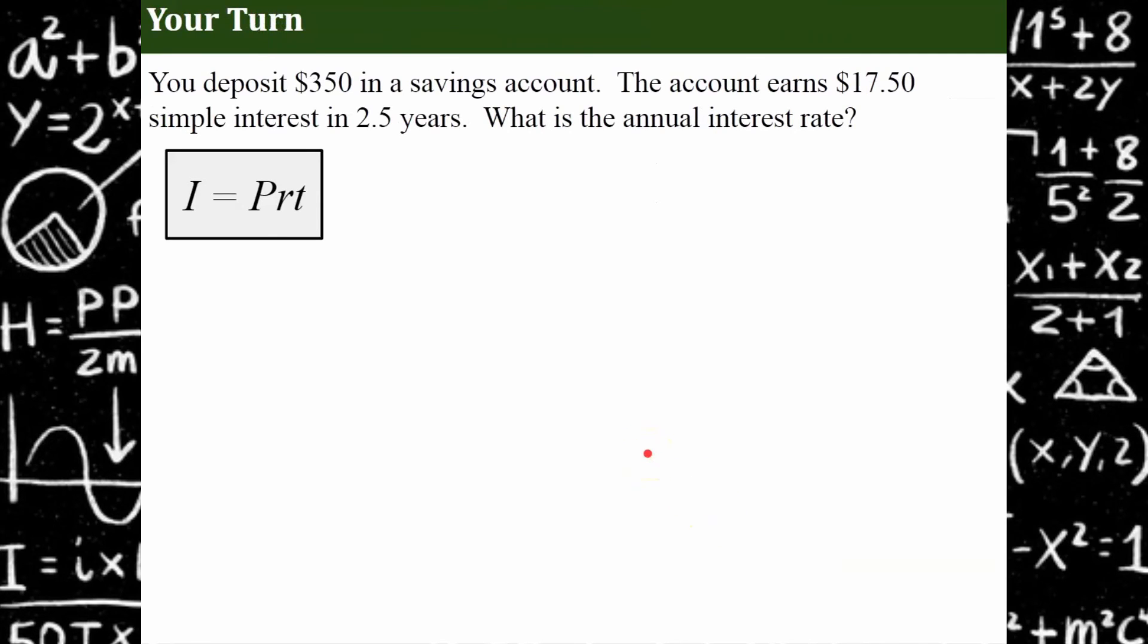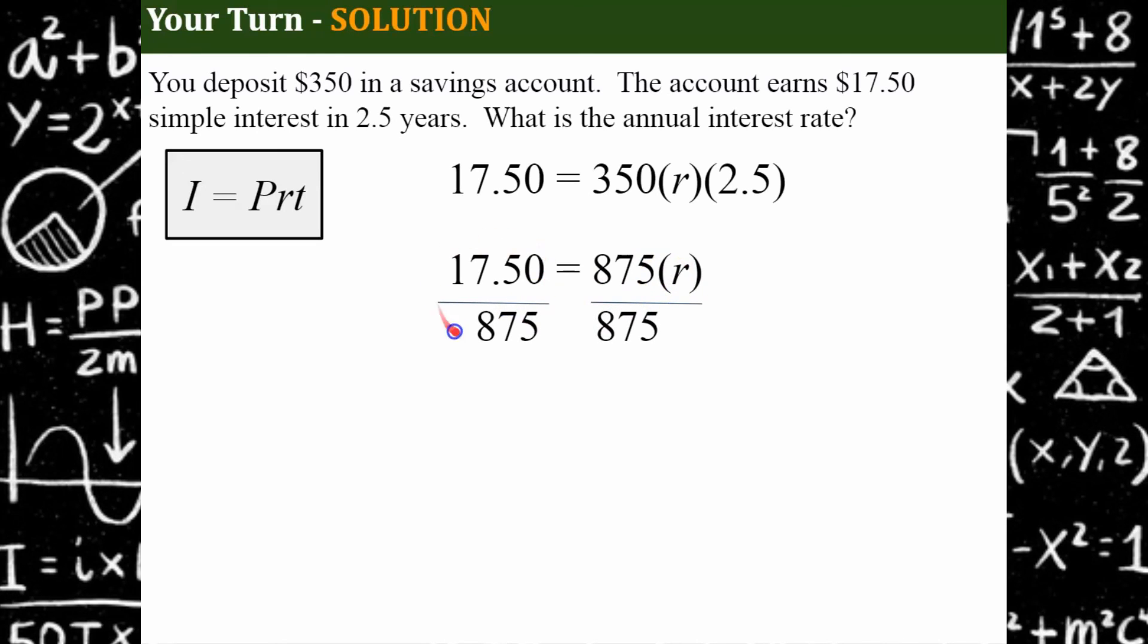Your turn. Go ahead and use this information to calculate the annual interest rate. Come back and hit play when you're ready. Welcome back. Let's see how you did. So we know that the interest earned was $17.50. Our principal P was $350. We didn't know the rate, and our time was two and a half years. So first thing you're going to do is multiply $350 by 2.5, which gives you $875. And then to solve for R, we're going to divide both sides by $875. Calculator time, $17.50 divided by $875. And we solve and we get that R is 0.02. And we know that we need to write that as an interest rate, 2%. So the annual interest rate on this account was 2%.